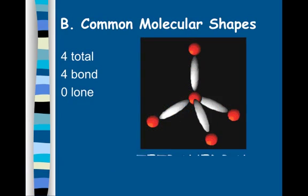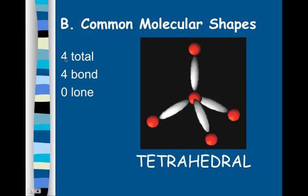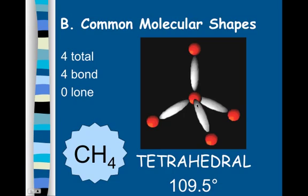Another common shape is the tetrahedral shape. We have four electron pairs total, all four of which are bonding, for a tetrahedron. The bond angle is 109.5 degrees. An example is methane, CH₄.